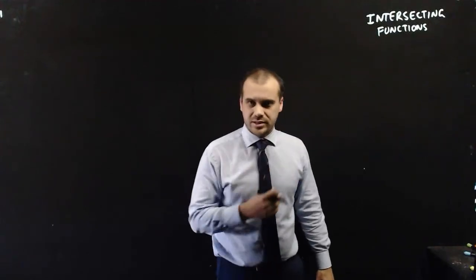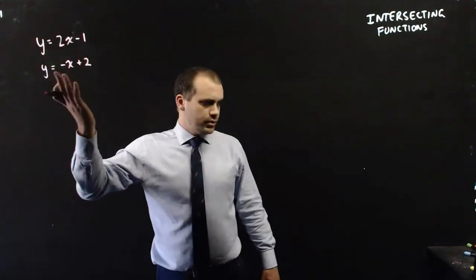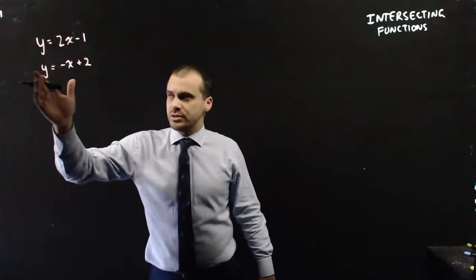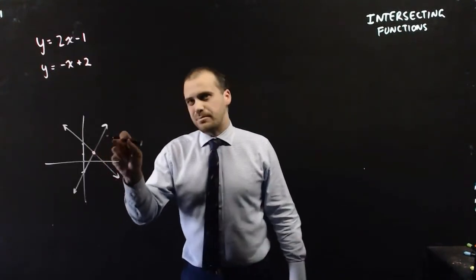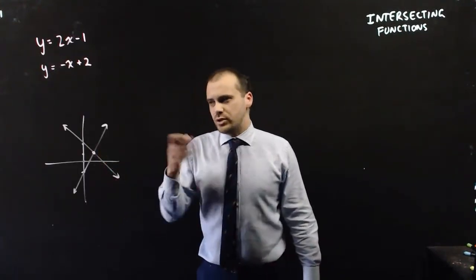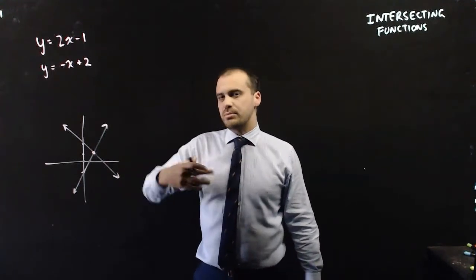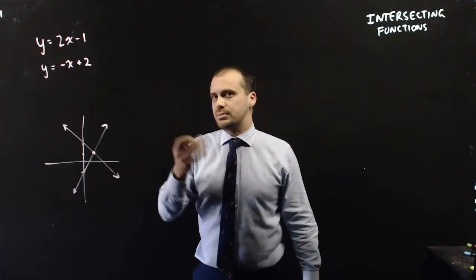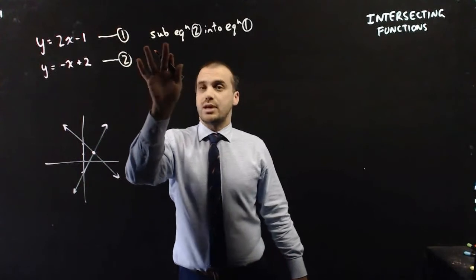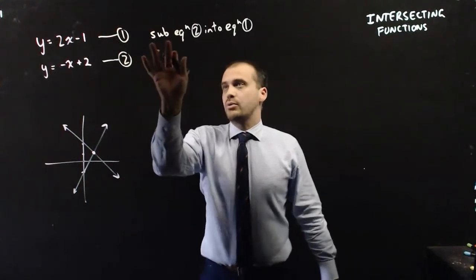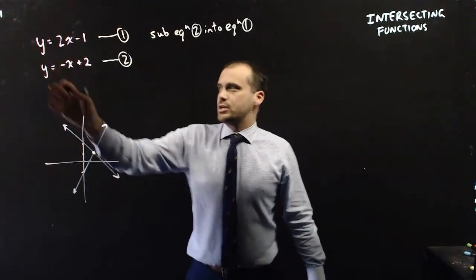You've dealt with intersecting functions before. These are two functions, and you can sketch them and they intersect at a point. You can find that intersection not just by sketching them, but also by solving simultaneous equations. One method for doing that is called substitution, where you sub one equation into the other equation.